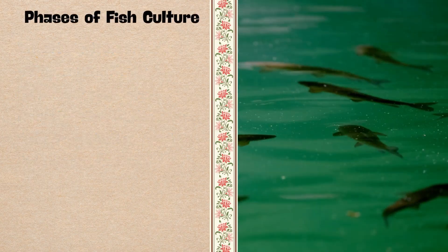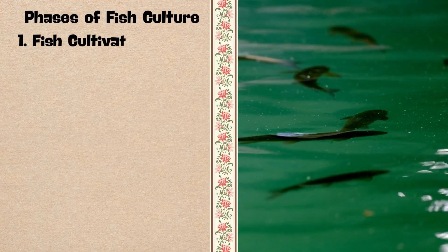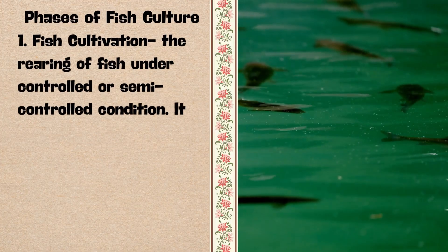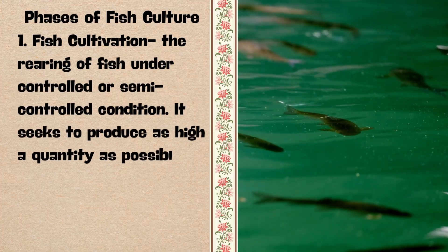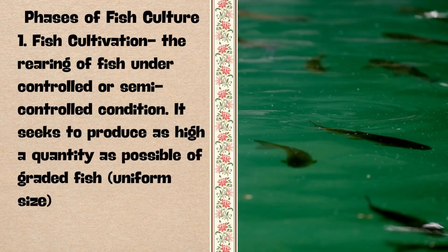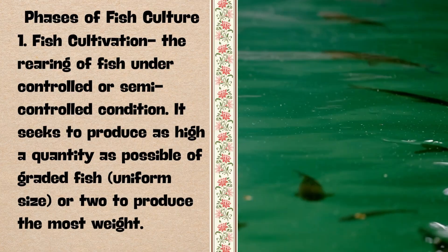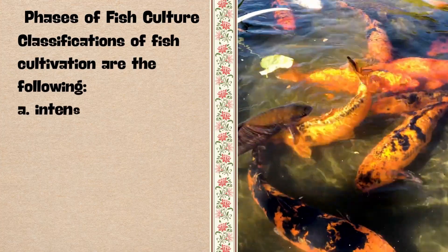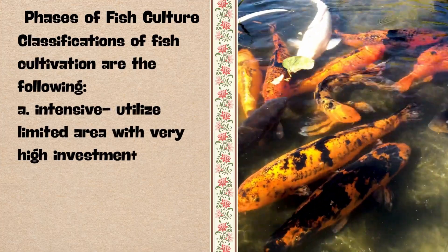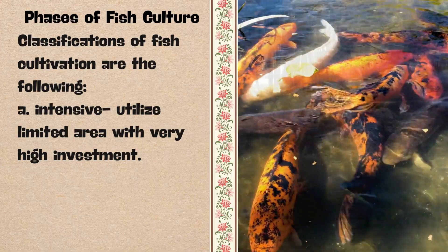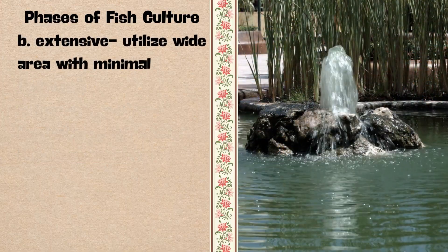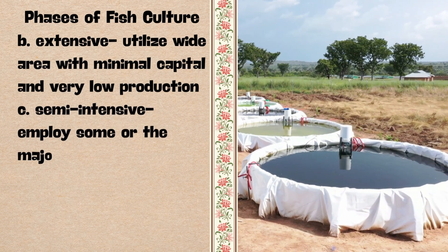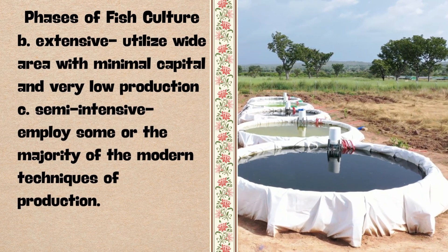Here are the phases or aspects of fish culture. 1. Fish Cultivation — it is the rearing of fish under controlled or semi-controlled conditions. It seeks to produce as high a quantity as possible of graded fish of uniform size, or to produce the most weight. Classifications: A. Intensive — utilizes limited area with very high investment. B. Extensive — utilizes wide area with minimal capital and very low production. C. Semi-intensive — employs some or the majority of the modern techniques of production.